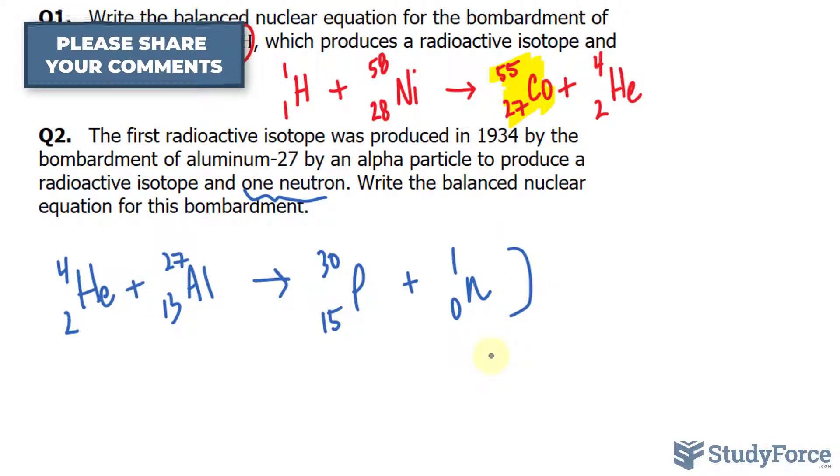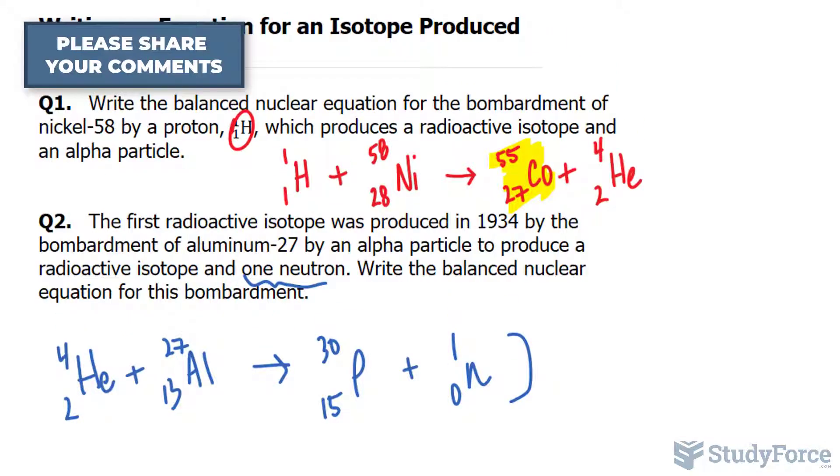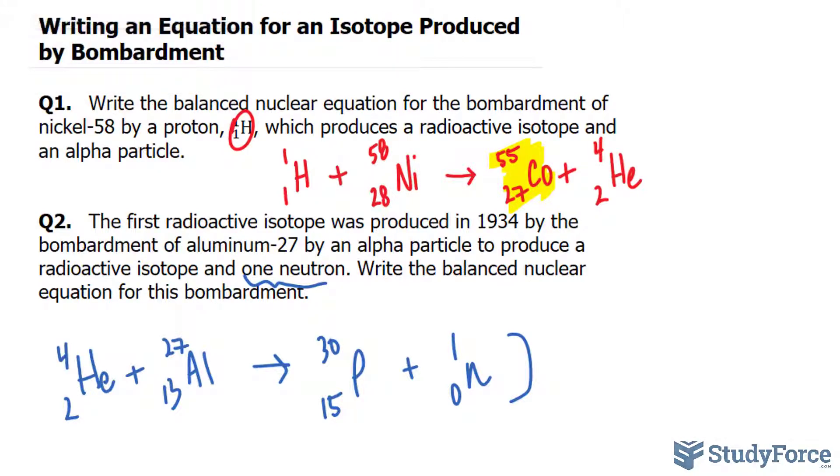This represents the balanced nuclear equation for this bombardment. And that is how to write an equation for an isotope produced by bombardment.